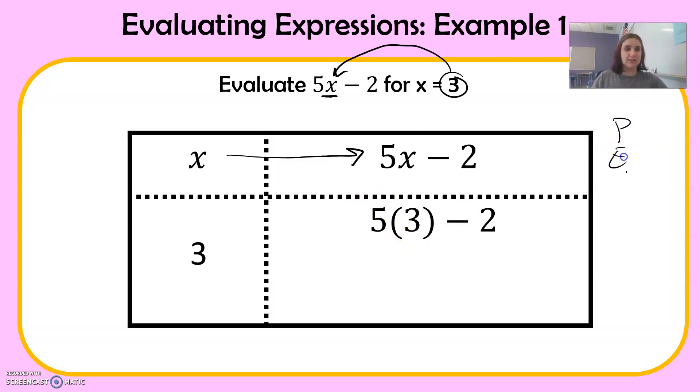The order of operations, parentheses, exponents, multiply, divide, add, subtract. So my parentheses are right here and these are being multiplied together. So 5 times 3 is 15. And then I still have my minus 2. 15 minus 2 is 13. So we evaluated this expression and got 13.